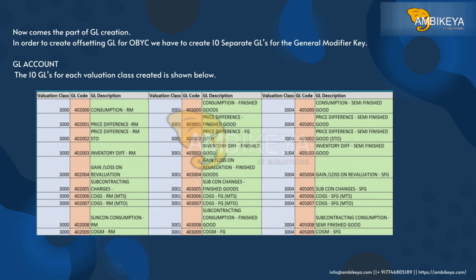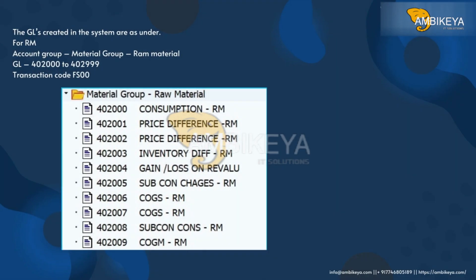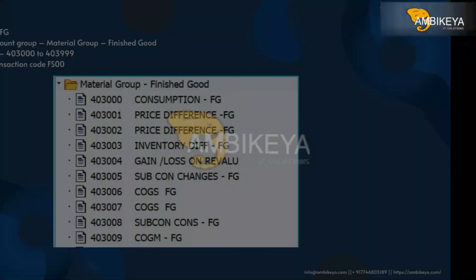The GLs created in the system for RM are under the RM account group, material group RAM. GL range: 402000 to 402999. Transaction code FS00.